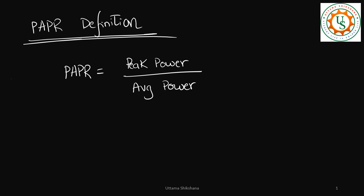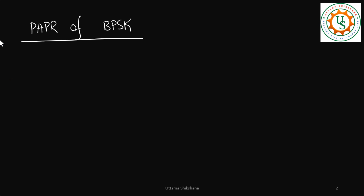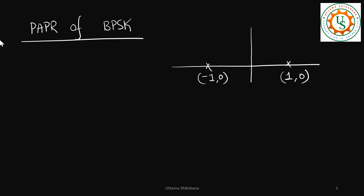First, we will talk about the PAPR of a BPSK system. For the BPSK system, we need to take the reference constellation. Let us take the constellation with points at 1 and minus 1 — that is, minus 1 comma 0 and 1 comma 0.